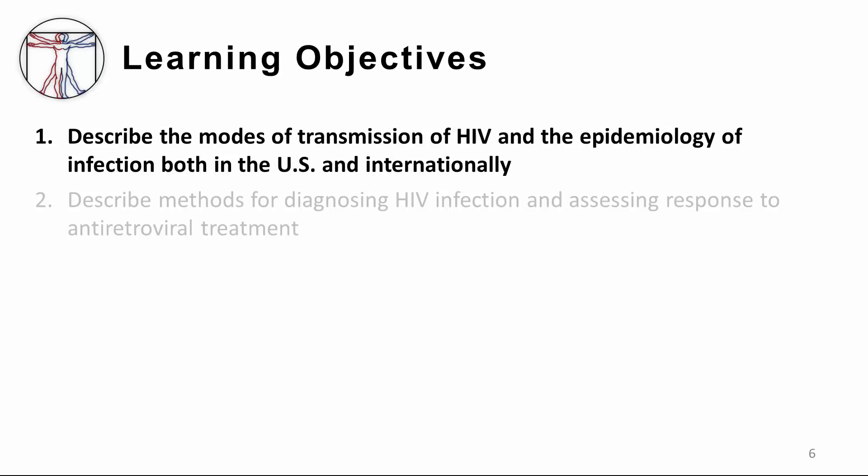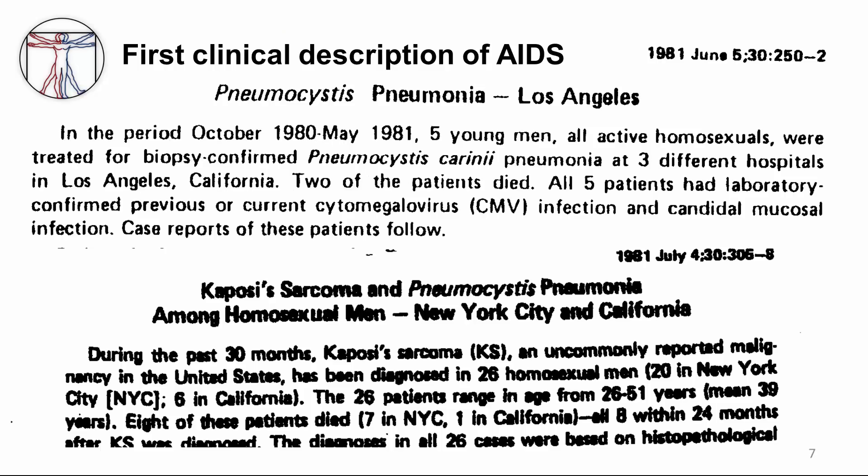Let's start with epidemiology. As Larry Altman writes: at first, it seemed an oddity — a scattering of reports in the spring and early summer of 1981 that young gay men in New York and California were ill with forms of pneumonia and cancer, usually seen only in people with weakened immune systems. In hindsight, of course, these announcements were the first official harbingers of AIDS.